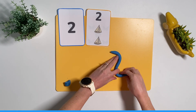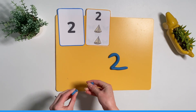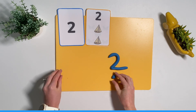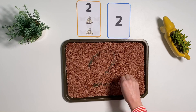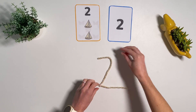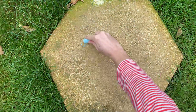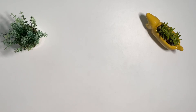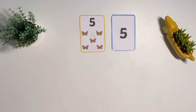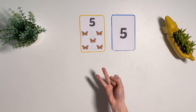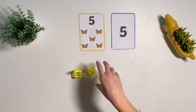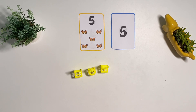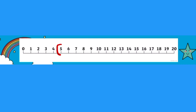Can children make that number using play-doh? Can they count out the correct number of objects? How many other ways can they make that number? Continue playing number snap. Can children show the number on their fingers or count out the correct amount of objects? Can they circle the number on a number line?